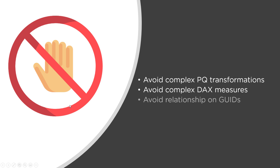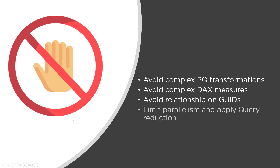Avoid relationships on GUID columns — unique identifier columns. Power BI doesn't support this data type natively and needs to apply internal data conversion during query execution, which will obviously affect performance. The solution is to convert this data type within the source database before Power BI generates its own queries. Also, limit parallelism whenever possible — you can define the maximum number of connections that Direct Query can open at the same time.